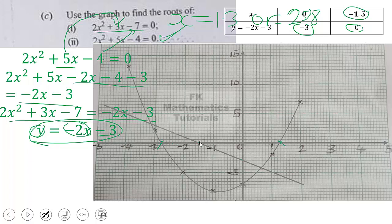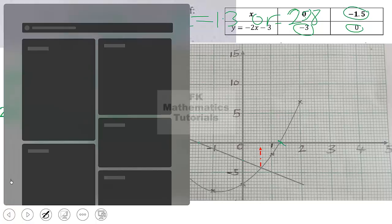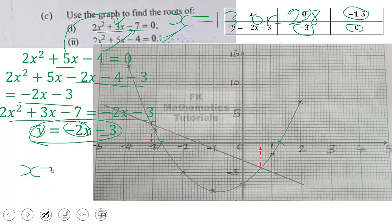We now trace the intersections of the curve and the straight line onto the x-axis to read off the solutions. We can see x = −3.1 on one side and x = 0.6 on the other side.